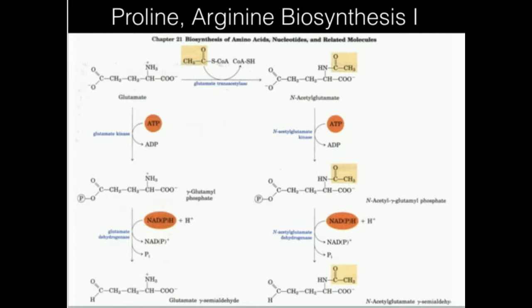Glutamate is going to react with glutamate transacetylase. It gets an acetyl group from acetyl-CoA. Going down this column we have glutamate, and going down this column, N-acetylglutamate. The only difference between these two columns is that the amine nitrogen is going to have an acetyl group on the right side. But essentially similar reactions are going to occur on both sides.